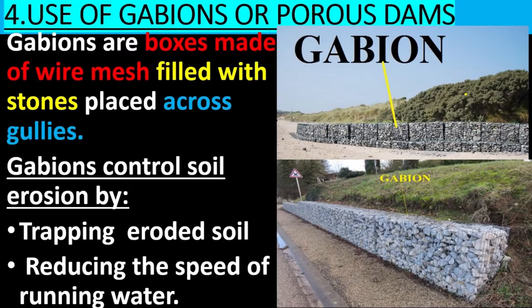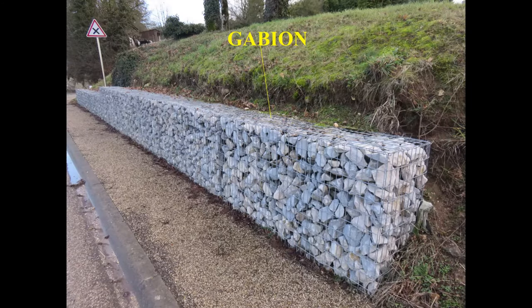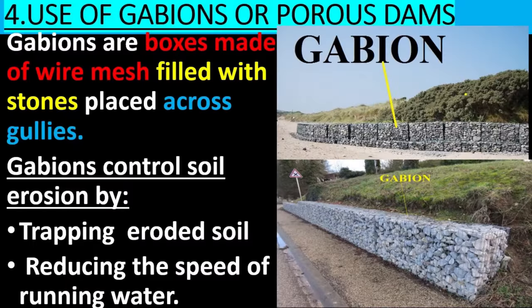Use of gabions or porous dams. Gabions are boxes made of wire mesh filled with stones, placed across gulleys. Gabions control soil erosion by trapping eroded soil and reducing the speed of running water.